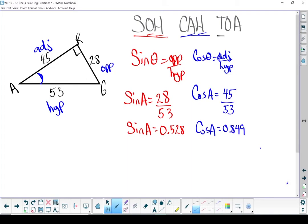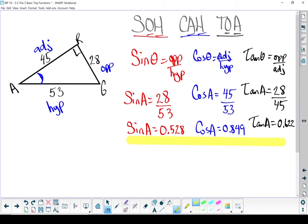And last but not least is my tan. Tan of theta equals opposite over adjacent. Tan of angle A equals my opposite is 28, and my adjacent is 45. Tan of A equals 28 divided by 45. 0.622. There are my trig ratios.